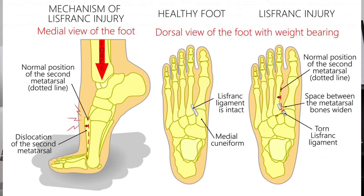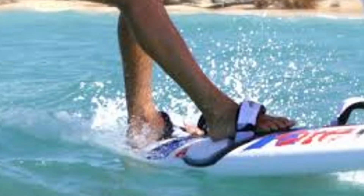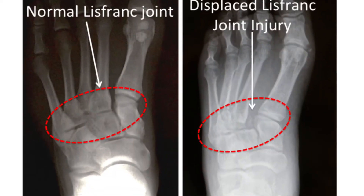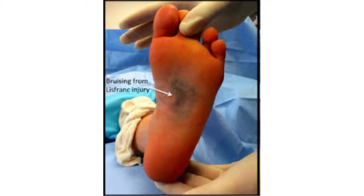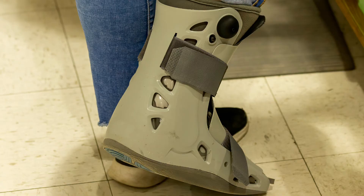Moving down the foot towards the midfoot, a key condition to identify is a Lisfranc injury, usually the result of the foot being in plantar flexion — slightly pointed down — and then rotated outwards. We often see these in horse riding or windsurfing, where a strap over the top of the foot holds it in position and the person falls to the side, causing dislocation of the second metatarsal. This is important to identify because the second metatarsal works as a keystone to the midfoot; disruption affects the entire midfoot integrity. These patients show a specific mechanism of injury and unusual bruising — a line of bruising in the midfoot on the underside of the foot. They need immediate referral for imaging, typically AP, PA, and oblique x-rays. Milder cases are placed in a boot, while severe cases require surgery.